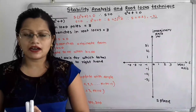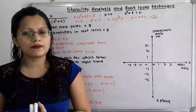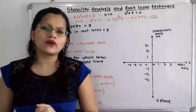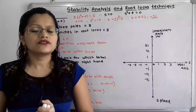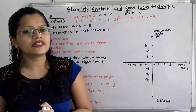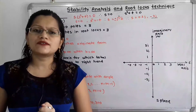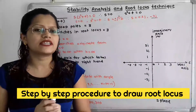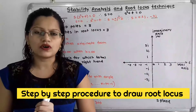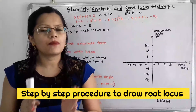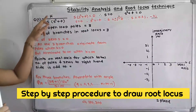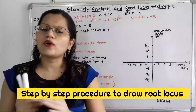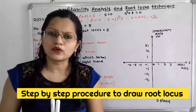Hello friends, this is Priyanka. Today we are going to solve a problem on stability analysis and root locus technique. We are going to understand how to draw root locus for open loop transfer function with unity feedback. The open loop transfer function is given as G(s)·H(s), but since feedback is unity, H(s) = 1. The given open loop transfer function is G(s) = K divided by s(s² + 4), and for this we have to draw the root locus.